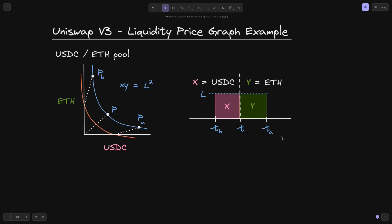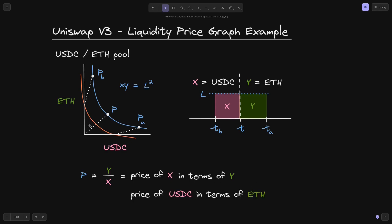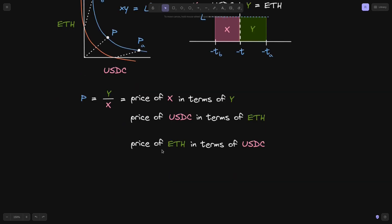For the rest of the video, I'll explain how to derive this graph. To start off, we'll review what P is. P is equal to Y divided by X, and this is equal to the price of X in terms of Y. In this ETH USDC pool, X is USDC and Y is ETH, so P will be equal to the price of USDC in terms of ETH. However, what we're interested in is the price of ETH in terms of USDC. To get this, we need to flip this equation — instead of Y on top and X on the bottom, we'll have X on top and Y on the bottom. Simple algebra shows that X over Y is equal to 1 over P.